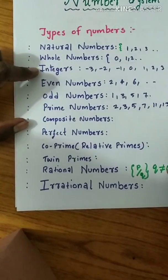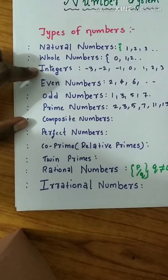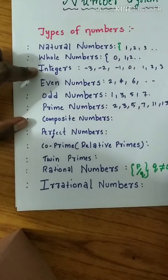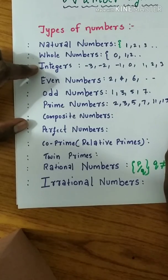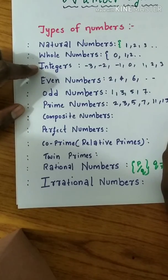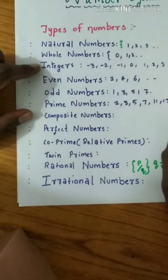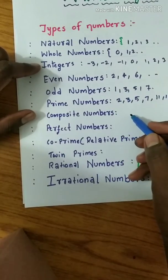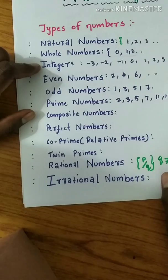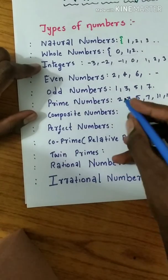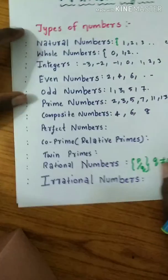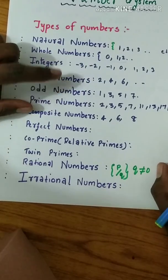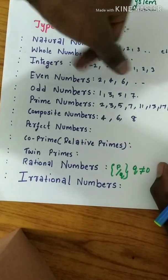Composite numbers - all counting numbers which are not prime. Examples: 4, 6, 8, which have more than two factors. Prime numbers have only two factors: the number itself and one.